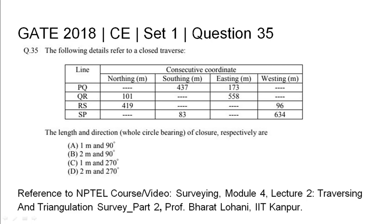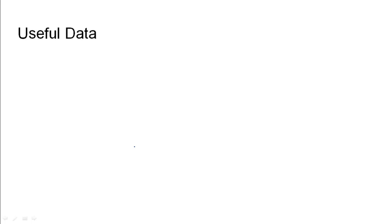Gate 2018 Civil Engineering Set 1 Question 35. The following details refer to a closed traverse. The Northing, Southing, Easting and Westing are given for four consecutive lines PQ, QR, RS and SP. The length and direction in whole circle bearing of the closure needs to be found. Four options have been given. The relevant NPTEL reference has been cited.